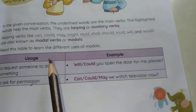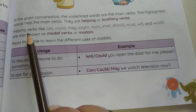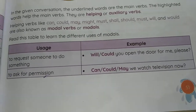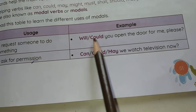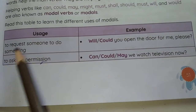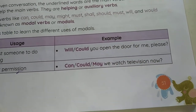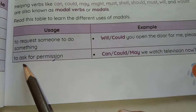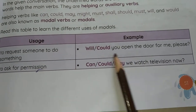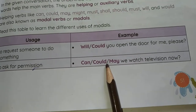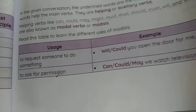Now we are moving to the next exercise — modals. Helping verbs like can, could, may, might, must, shall, should, will, and would are known as modal verbs. Will and could can both be used to make a request, but 'could' is more polite. 'Will you open the door for me?' versus 'Could you open the door for me?' To ask for permission, you can use can, could, or may — formally we use 'may'.